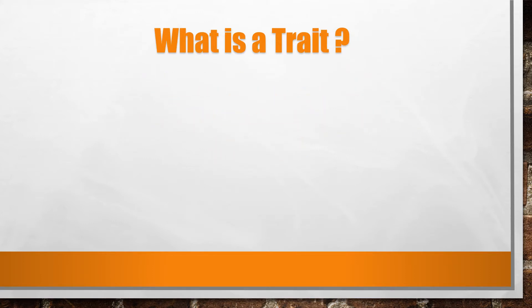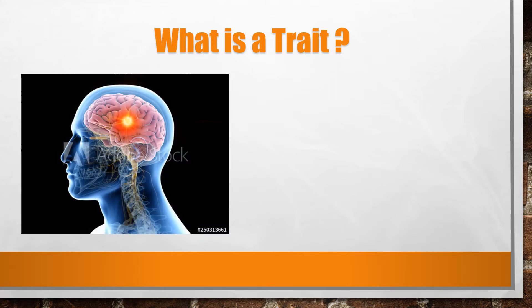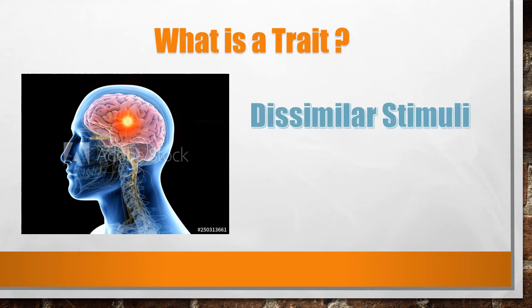What is a trait? A trait is a neuropsychic system that exists but is invisible. It is located in certain parts of the nervous system. Similar stimuli arouse a trait within the person.